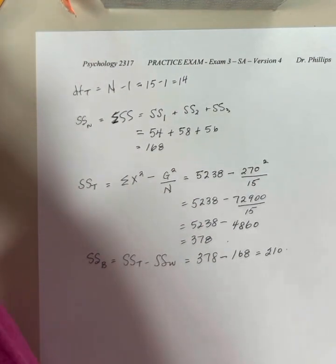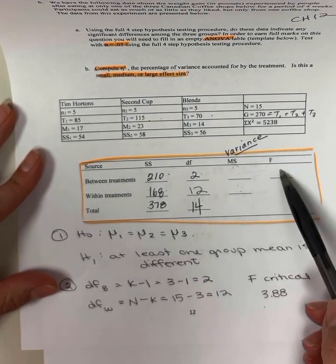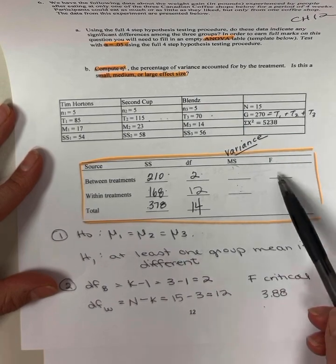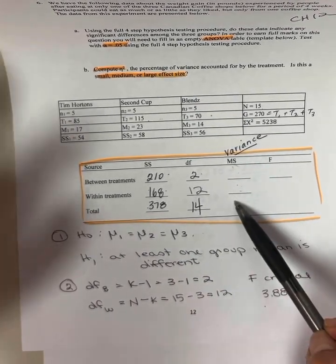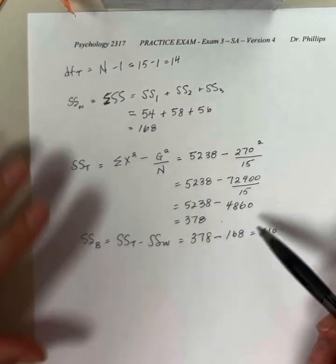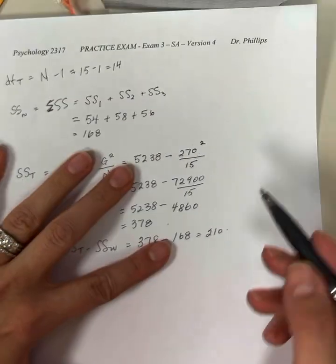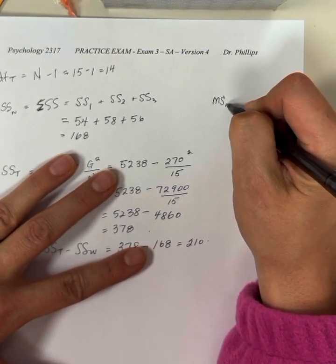Now, if I'm not sure what to do next, I know I want to get here. I know I want to calculate the F. I can't get there yet because I don't have my mean squares. So that's the next step that I need to do. I need to calculate my mean square within and my mean square between.